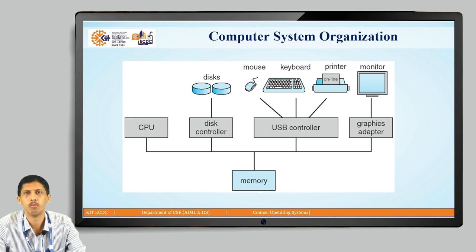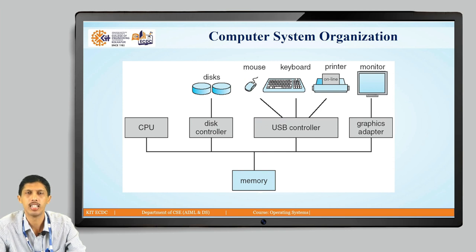To give a broader picture of how the computer system is organized: a disk, mouse, keyboard, printer, and monitor can all be called resources. A disk is connected to a disk controller; mouse, keyboard, and printer are controlled by a USB controller; and a monitor is managed by a graphics adapter. These in turn pass information to the memory. This diagram shows the three levels of information passing in a computer system.